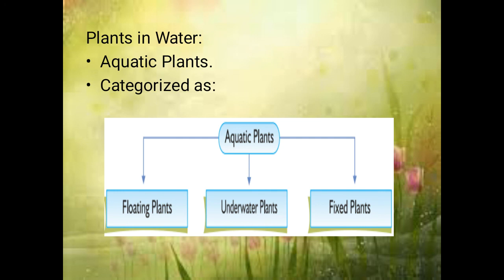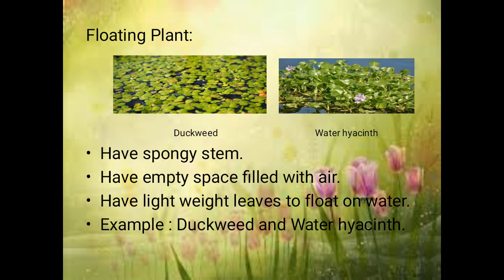Floating plants just float on the water — they don't have any support under the water. Underwater plants are found under the water; we cannot see them outside. They grow only under the water. Fixed plants can be seen outside the water, but their stem is fixed under the soil. Floating plants have a spongy stem and examples are duckweed and water hyacinth. They are very light.